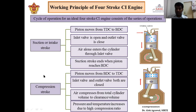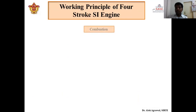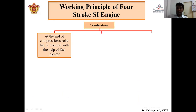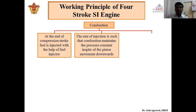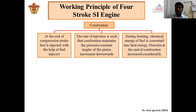The third event is the combustion process, where combustion occurs by the injection of fuel. At the end of the compression stroke, fuel is injected with the help of a fuel injector at the head of the combustion chamber. The rate of injection is such that combustion maintains constant pressure — unlike a spark which occurs instantaneously, fuel injection requires a certain interval of time. As fuel injection proceeds the piston starts moving from top dead center to bottom dead center so that the pressure remains constant inside the cylinder.